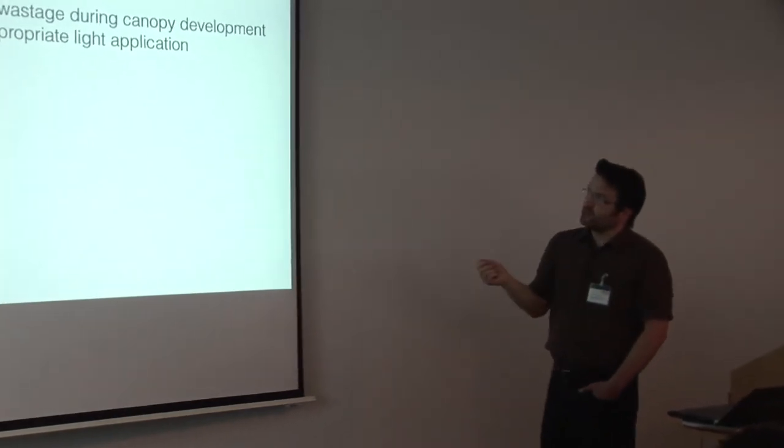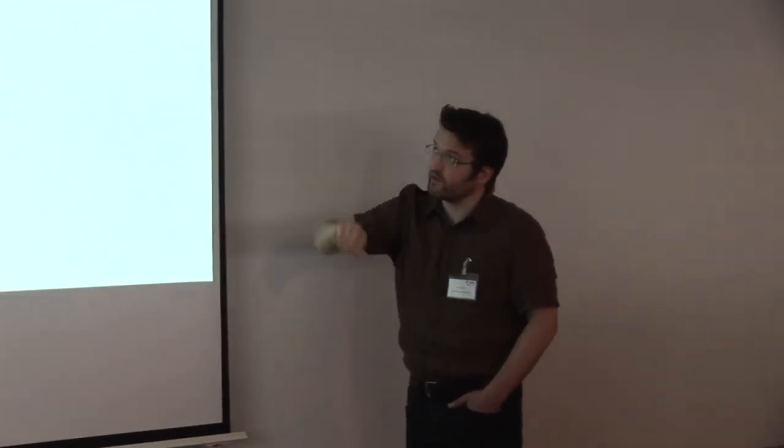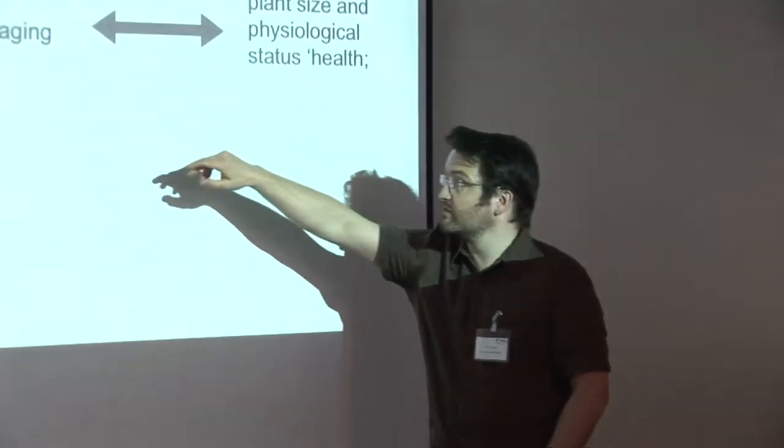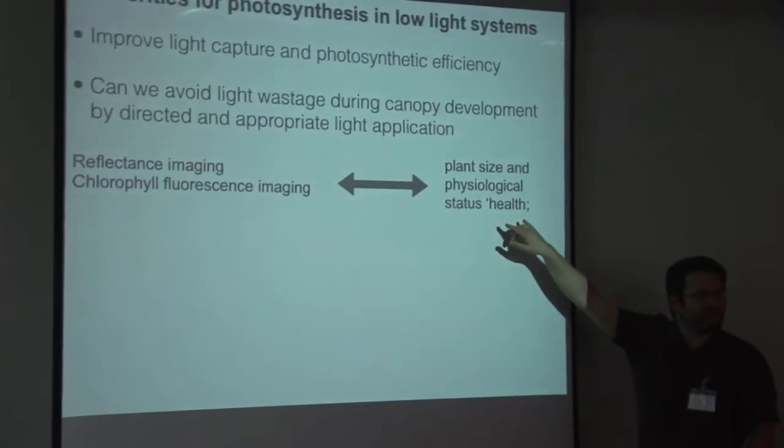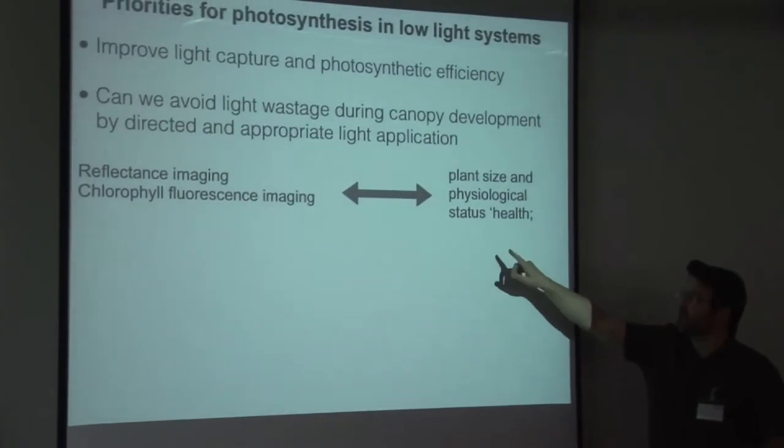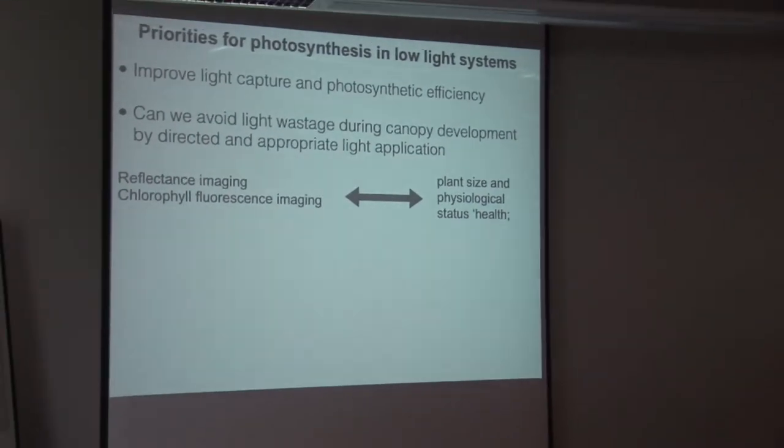Okay, so if we take low light systems and we say we want to improve light capture and photosynthetic efficiency, I think that's critical. And we also want to avoid wastage of light during canopy development. This is also something that affects crops in the field. So I was wondering whether we can use techniques that I mentioned like reflectance imaging and chlorofluorescence imaging for assessing not just plant size but also physiological status and photosynthetic efficiency and also health of the plant. So we can also measure diseases using chlorofluorescence.